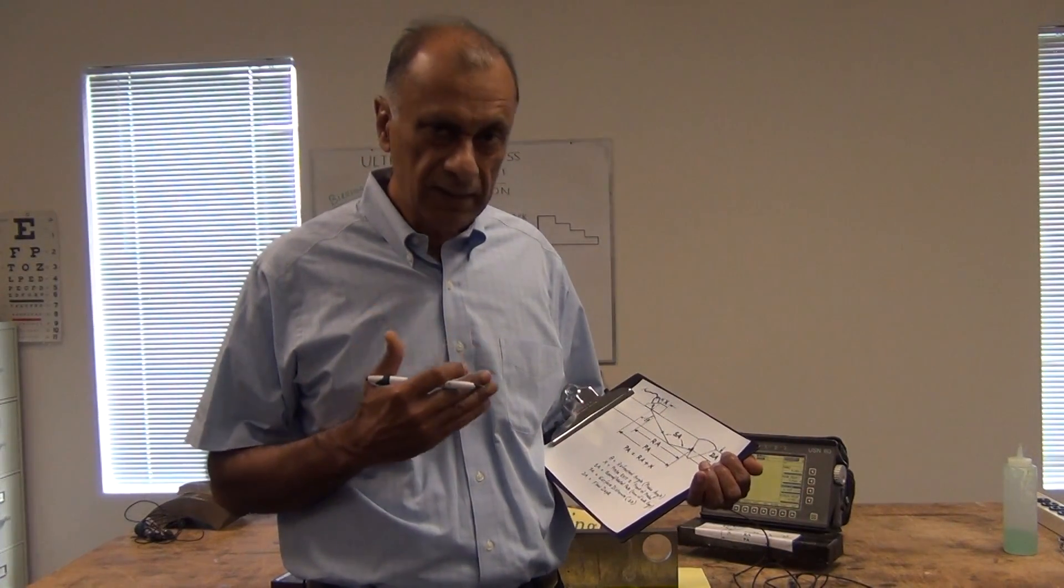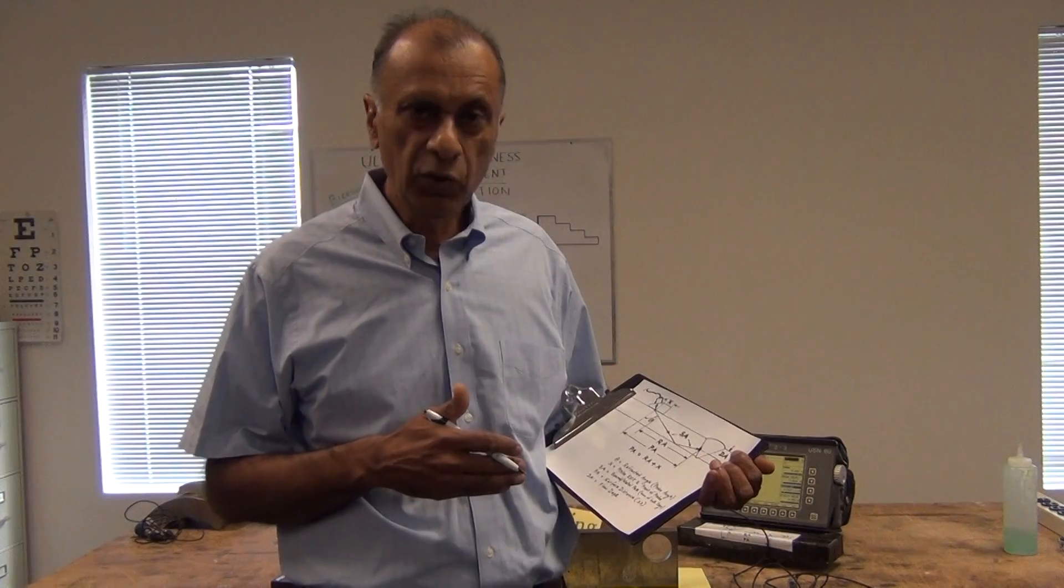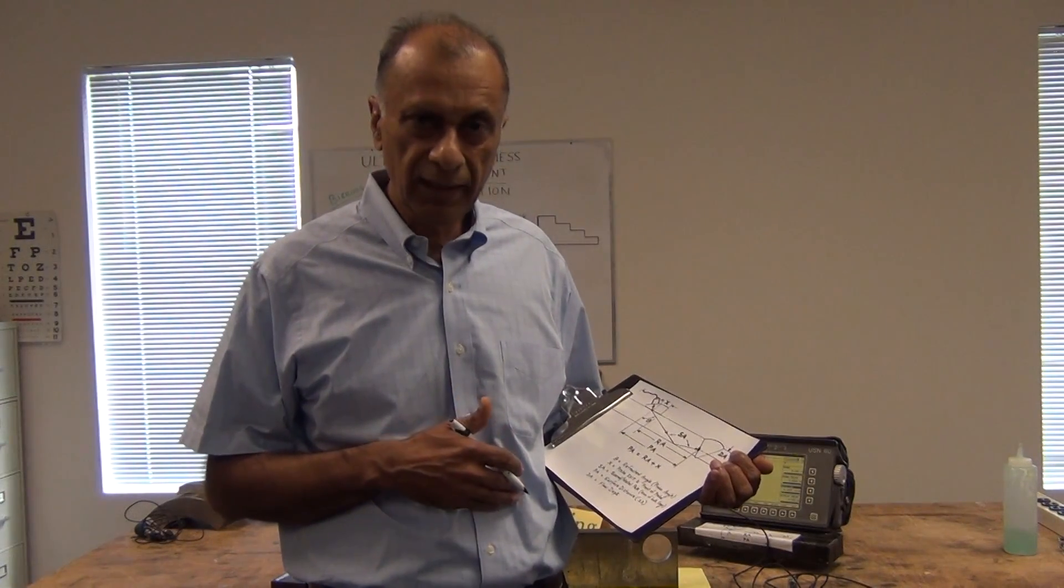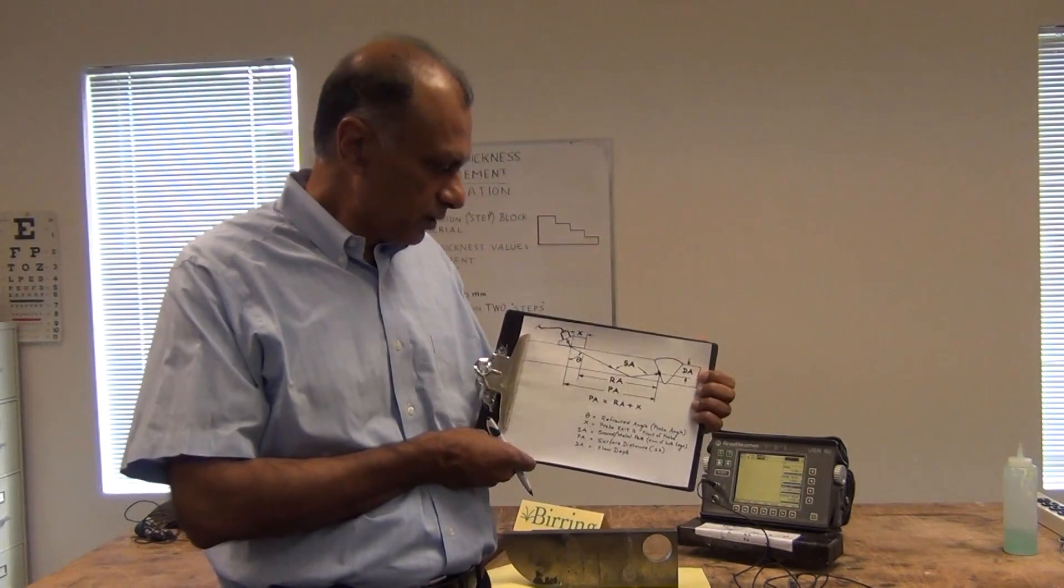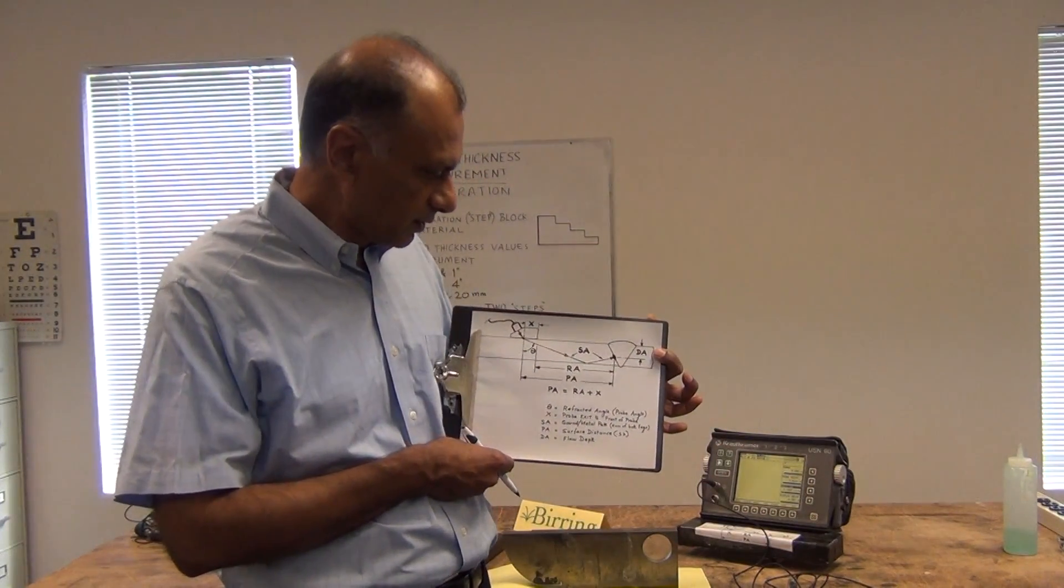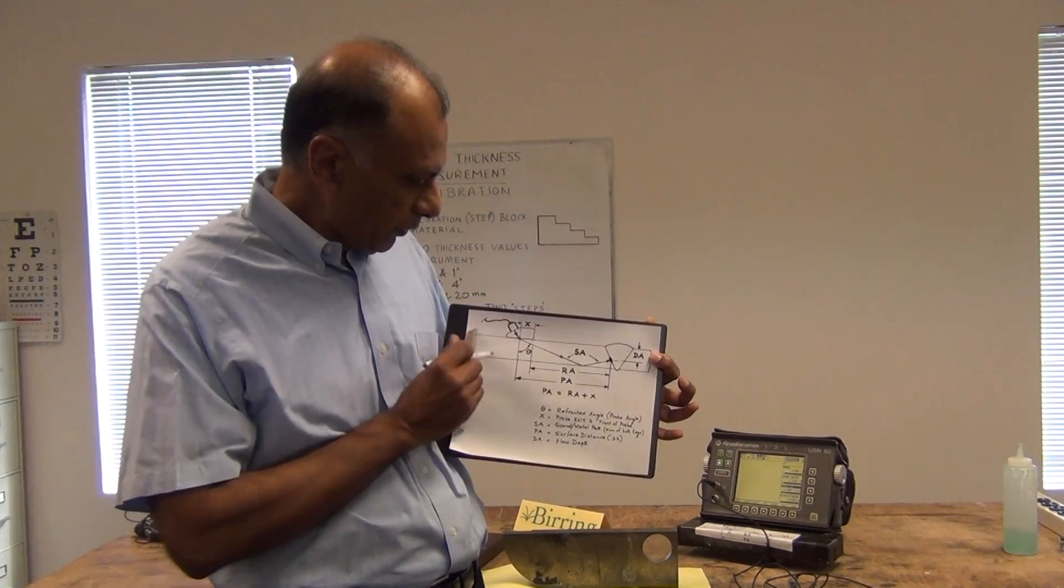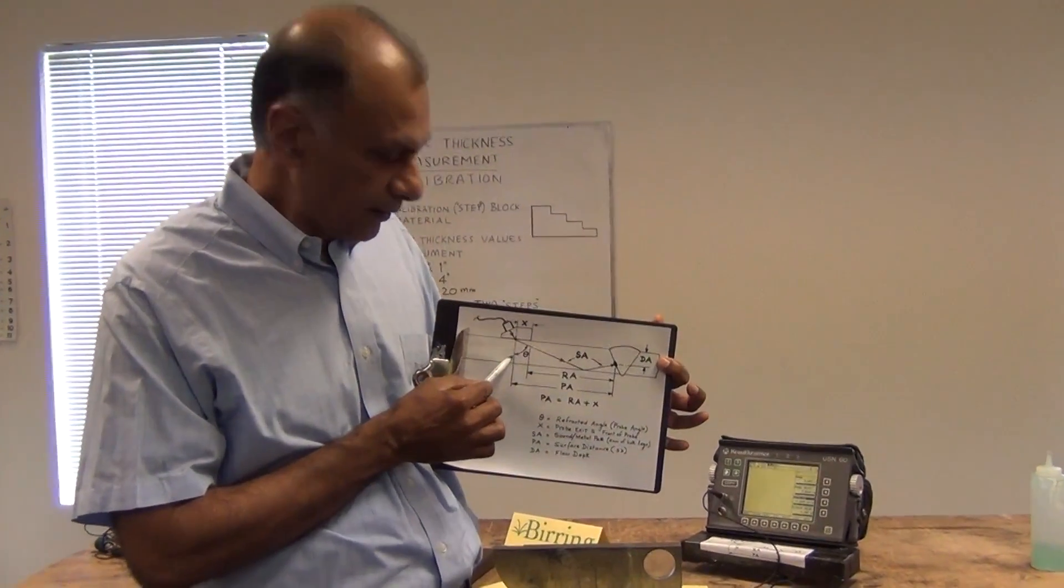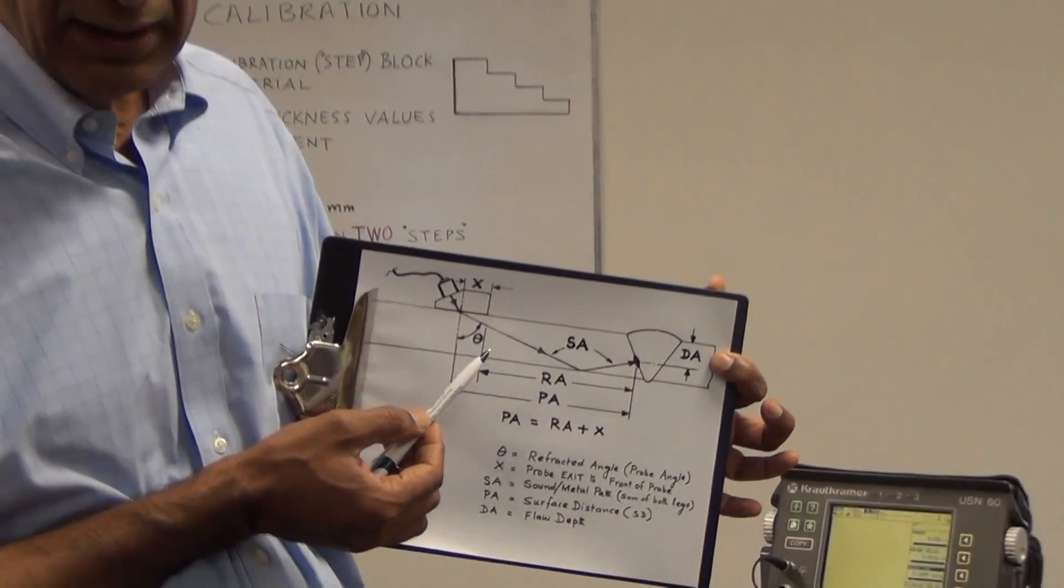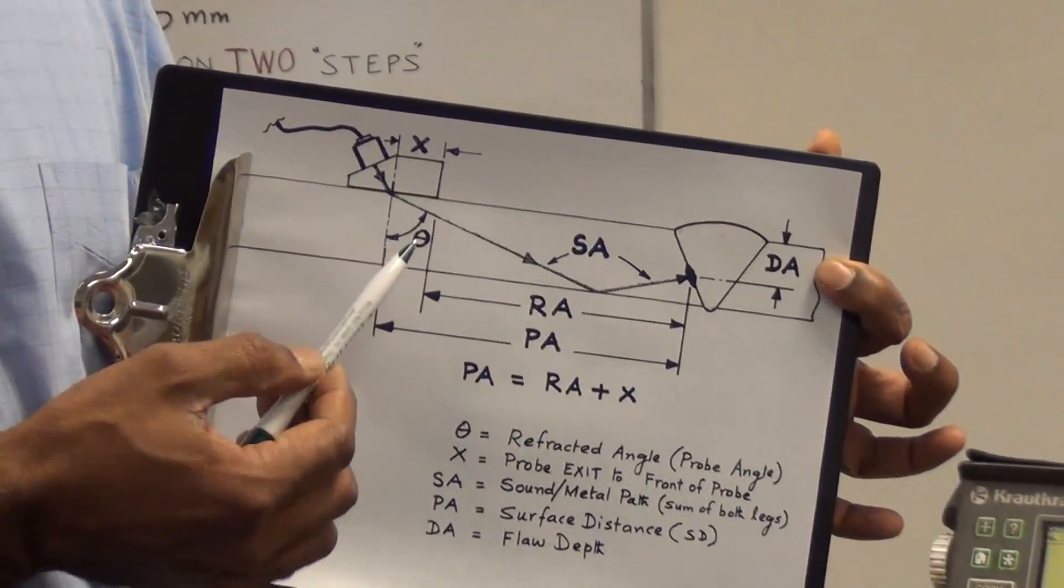First thing is that the concept has to be very clear. How do we inspect the welds using angle beam shear wave? This picture explains how the process is accomplished. We use an angle beam probe with a refracted angle which is given here, which would be 60 degrees or 45 degrees or 70 degrees.